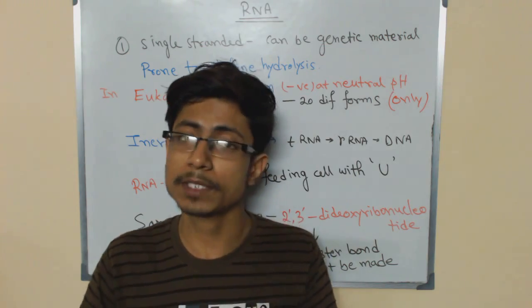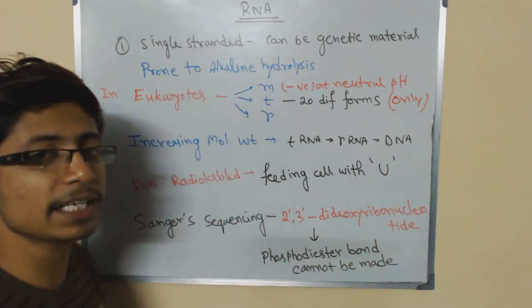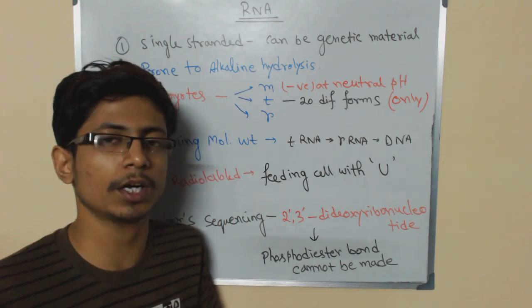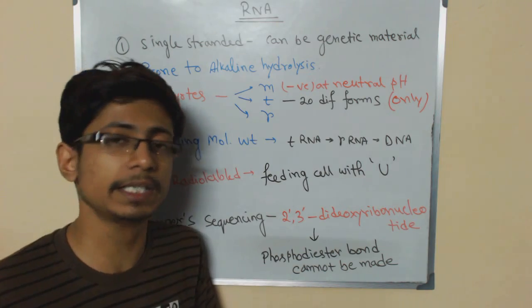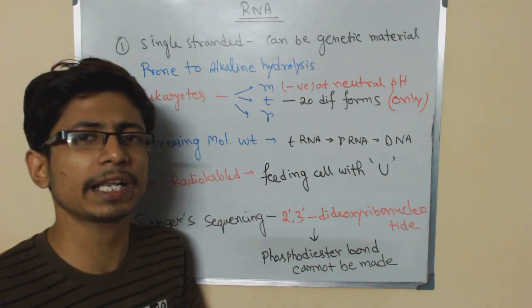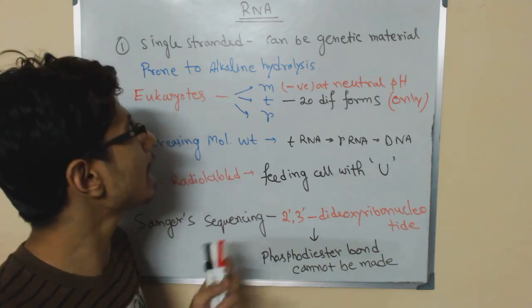Now RNA is prone to alkaline hydrolysis, and that thing is a unique feature because in contamination of RNA using inside the DNA, we usually treat it with alkaline solution which will degrade RNA but will leave the DNA intact. That's a good process.